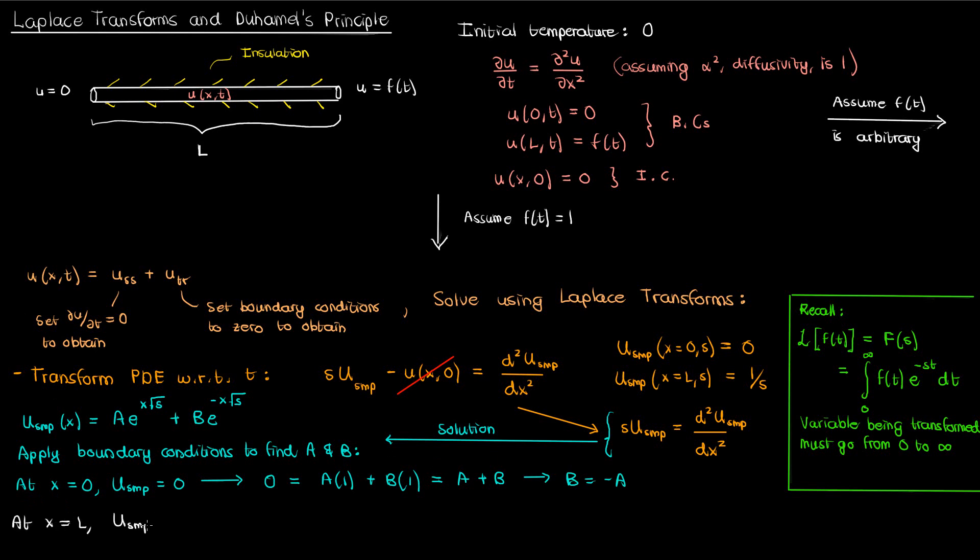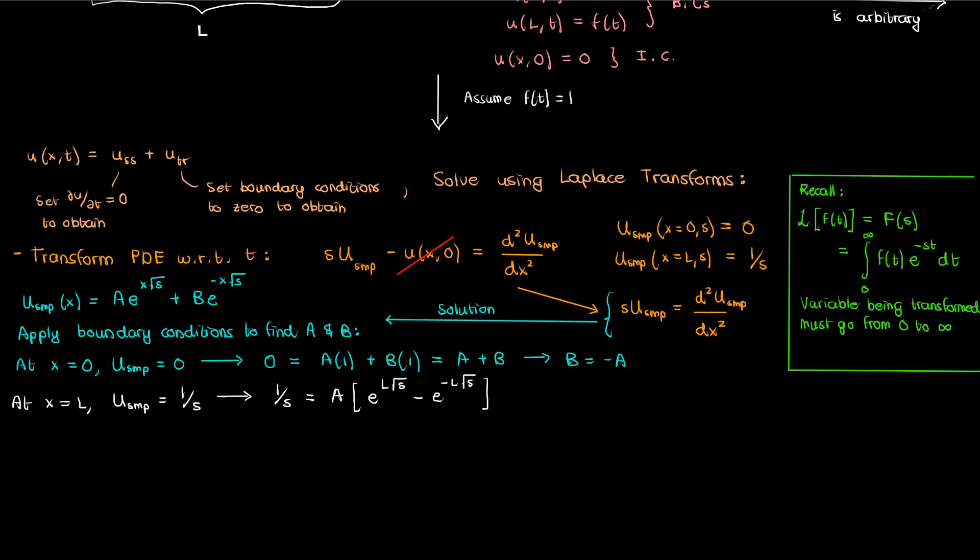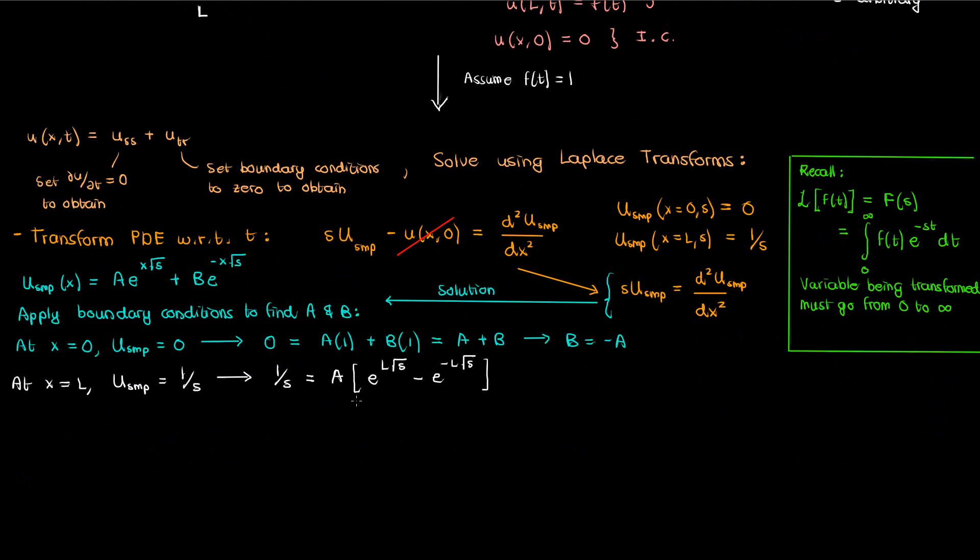Now for our second boundary condition, capital U sub SMP is 1 over S when x is L. Note that I've replaced b by negative a from the first boundary condition and taken a common. I've done this for a reason because this expression in the brackets very strongly resembles the definition of the hyperbolic sine or sinh. Recall that hyperbolic sine is e to the x minus e to the negative x over 2, so the expression in the brackets is just 2 times the hyperbolic sine of L square root of S. Therefore a is just 1 over 2s times the hyperbolic sine of L times the square root of S.